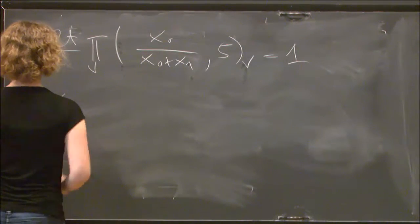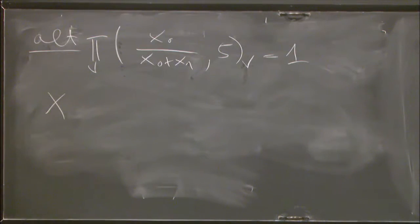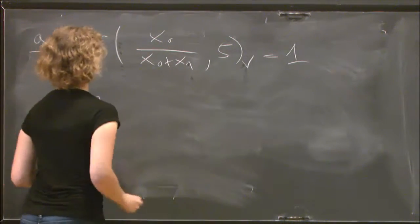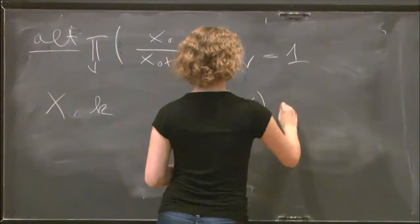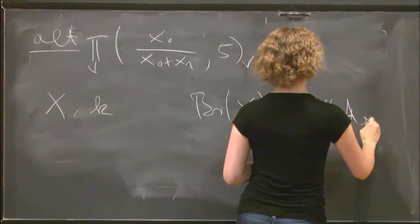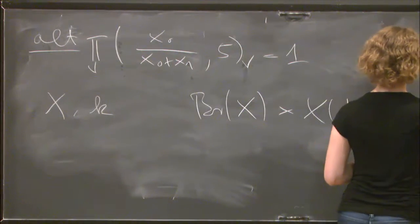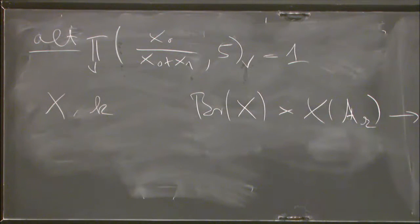So the general picture would be you take a, maybe, smooth projective variety x over some number field k. Then you can define a pairing of the Brauer group and the idelic points of x, mapping to Q mod Z. More precisely,